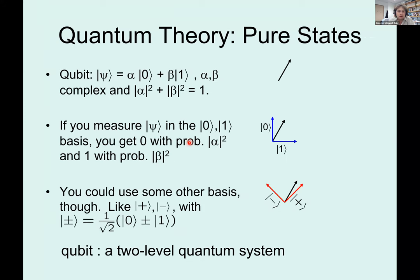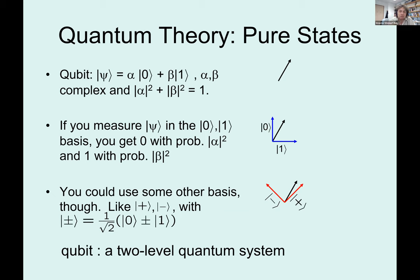In quantum theory we have qubits for two-level systems and q-dits for d-level systems. Think of the quantum state as a unit vector in some high-dimensional complex vector space. One key difference from classical theory is measurement: you have to pick a basis, and having picked it, the amplitude squared in front of a basis vector gives the probability of getting that outcome. Measuring a qubit in the zero-one basis gives either zero or one, with probability equal to the amplitude squared of the respective outcomes.